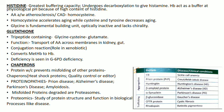Histidine has the highest buffering capacity. It acts as a buffer at physiological pH and is associated with atherosclerosis and coronary artery disease as homocysteine. Homocysteine accelerates the aging process, while cysteine and tyrosine decrease the aging process.